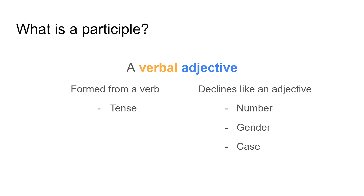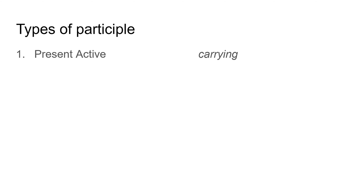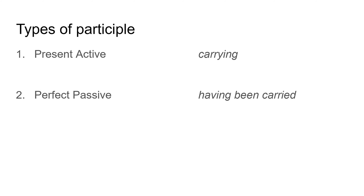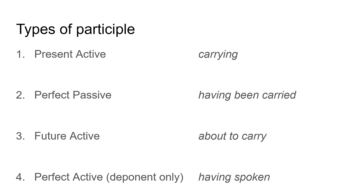There are quite a few types of participle. There's the present active participle — so 'carrying'. There's the perfect passive participle — 'having been carried'. There's the future active participle — 'about to carry'. And there's the perfect active participle, which is really only for deponent verbs, meaning 'having spoken'. The last video was about present active participles, so if you want to have a look at that go and check it out on my channel.